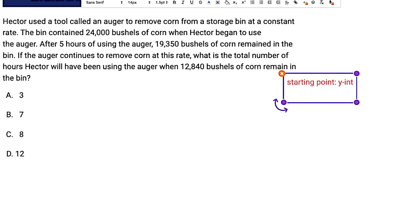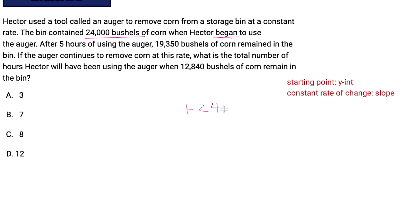And we are looking for a constant rate of change, which should be our slope. The reason I immediately recognize this is linear is that I see 24 bushels when Hector began to use the auger. This is a starting point. So we already know we have y equals mx plus 2400, right? Or sorry, 24,000, I should say. After five hours of using the auger, 19,350 bushels of corn remained. So we don't know what the constant rate of changes. They didn't tell us what the slope is. They didn't tell us how many bushels of corn Hector's working through in an hour.